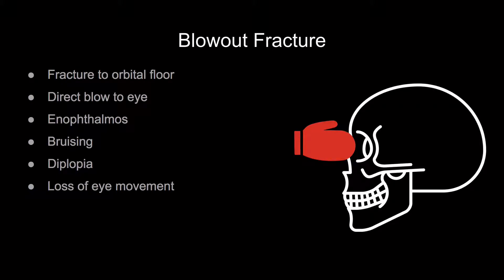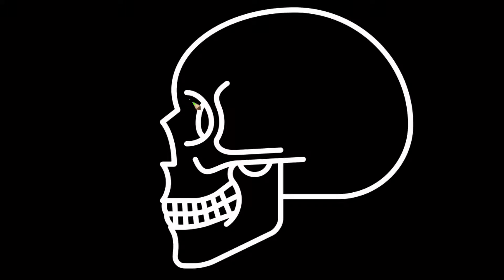A blowout fracture is a fracture through the orbital floor. It occurs with a direct blow to the eye, typically being punched. It presents as bruising around the eye, enophthalmos, diplopia or double vision, and a loss of eye movements. Let's study the anatomy on a diagram by adding in some details of the orbit.